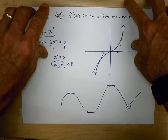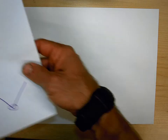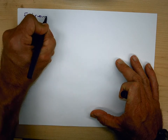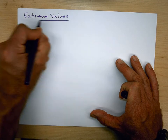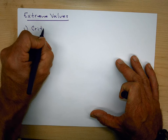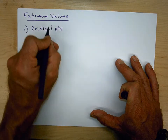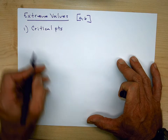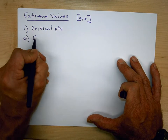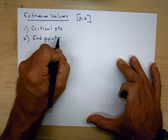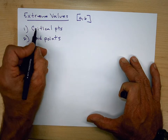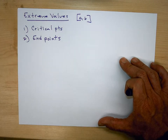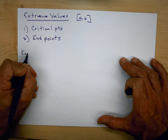So let's summarize: where do we look for extreme values? We look at the critical points, and we're looking at extreme values on a closed interval because that's the only time we're guaranteed to have an absolute or global max or min. And the other place we look is at the endpoints. We find the critical points — the endpoints will be given to us — and then once we know both, we can just plug them back into the function to determine which one is the absolute max and which one is the absolute min.